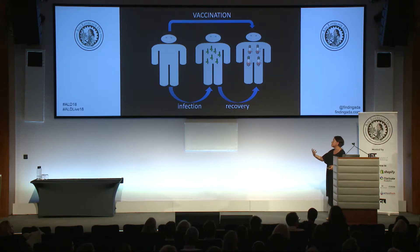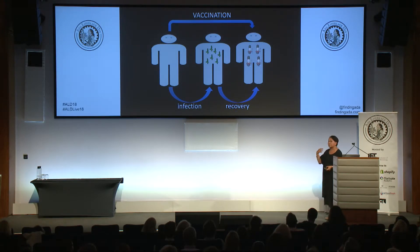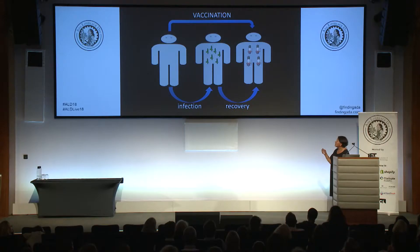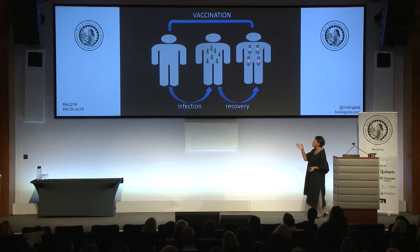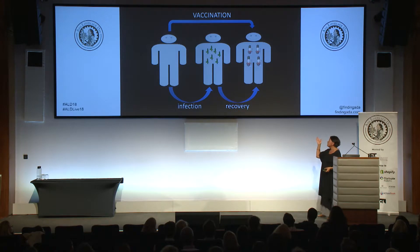The bugs have happily managed to enter this person; they are multiplying within that person, and their ultimate job is to spread to yet another susceptible individual. Meanwhile, this person typically will recover, and when they recover, they will often have immunity to the bug. What we try to achieve through vaccination — the whole rationale of vaccination — is to deliver someone from a state of being susceptible to being recovered and immune, but circumventing the state whereby they're infected by a pathogen, a bug which can cause disease and even death.